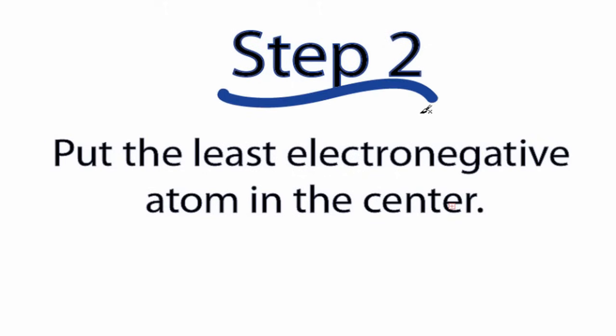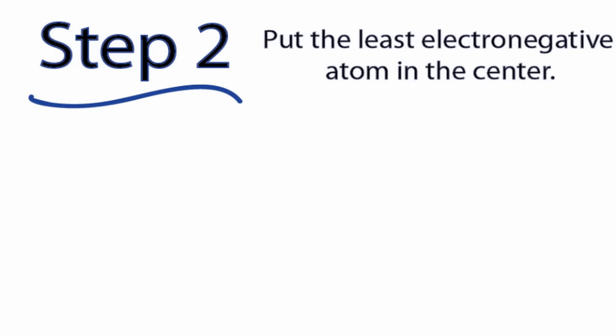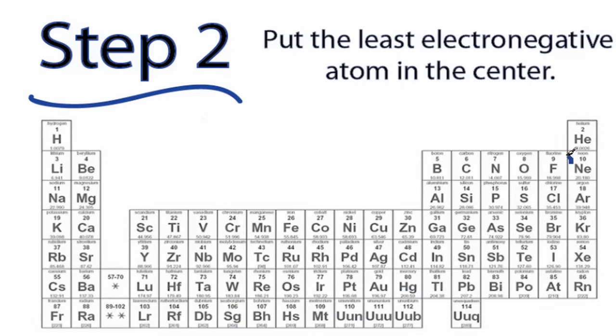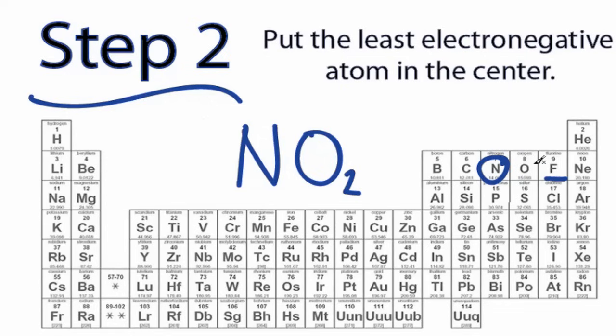Step 2. Put the least electronegative atom in the center. So how do you know it's the least electronegative atom? Just remember that fluorine is the most electronegative, followed by oxygen. So as you move away from fluorine and oxygen, atoms become less electronegative. That means those atoms will go at the center. Let's see how it works. When I draw the Lewis structure for something like NO2, I can see that nitrogen is further away from fluorine than oxygen. That means when I draw my Lewis structure, I'll put nitrogen at the center and oxygens on the outside.